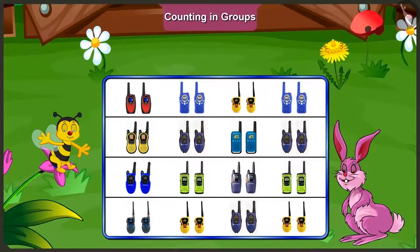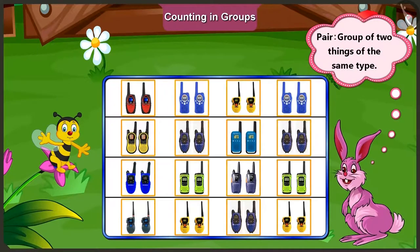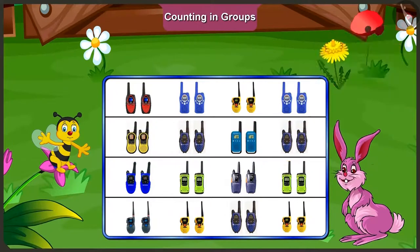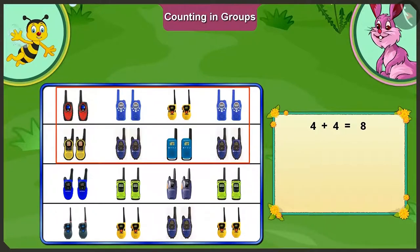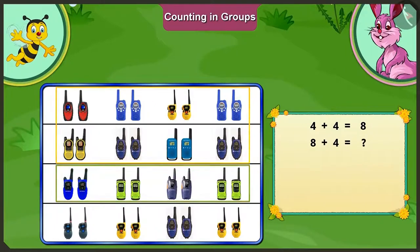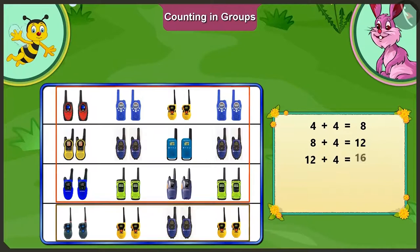Bunny, can you tell me how many pairs of walkie-talkies are over here? A pair means a group of two similar things, isn't it? Yes, that is right, bunny. Come on, let us count together. Here, in the first line there are four pairs. In the second line also four. That is, there are eight pairs in total. If we add four pairs from the third line, then how many pairs will be there in total?